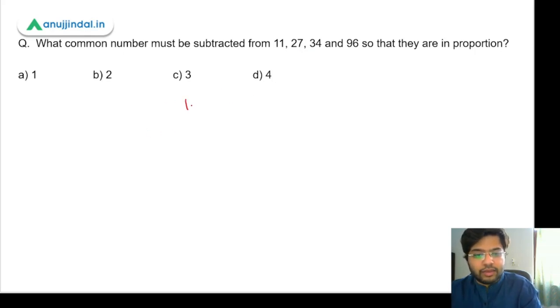We can say that basically (11 minus x) upon (27 minus x) is equal to (34 minus x) upon (96 minus x).